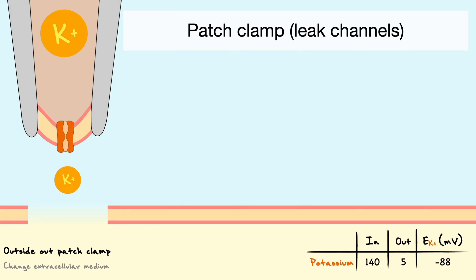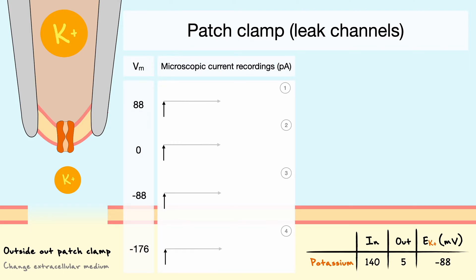Now let's use the patch clamp technique to clamp the system at various voltages. For each command voltage value, the microscopic current recordings in picoamperes as a function of time will look a bit like this. As a side note, here microscopic simply refers to the fact that the current comes from one channel. As you can see, microscopic currents are quite different from the usual continuous currents we are used to see.